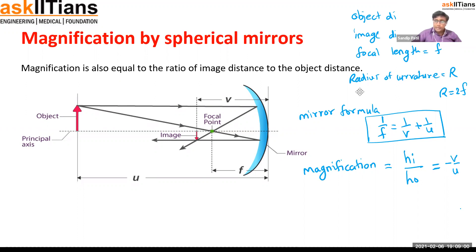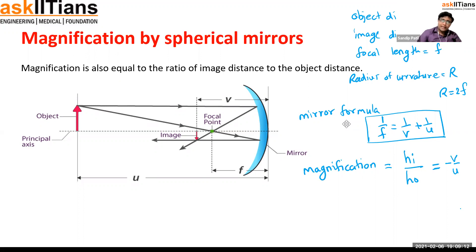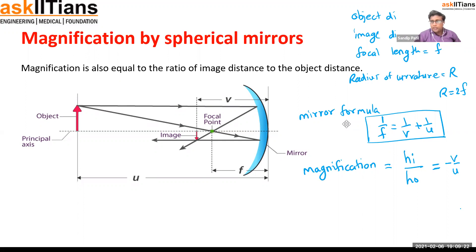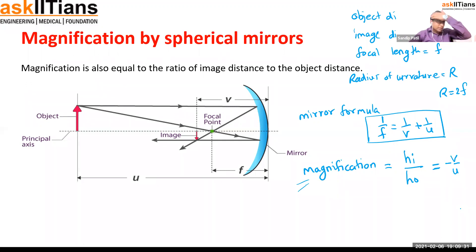In questions, they will give you the object distance U and ask where the image will be — you calculate V using the mirror formula. They may also ask whether the image is smaller or greater — you use the magnification formula. Let's solve some questions to clear the concepts.